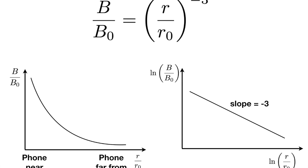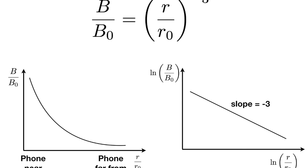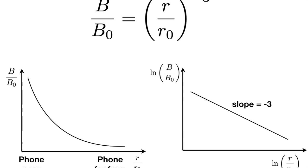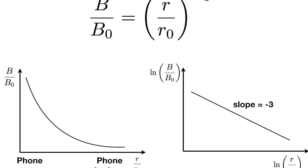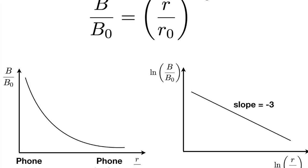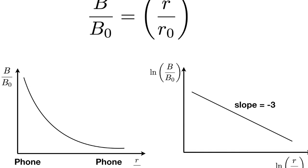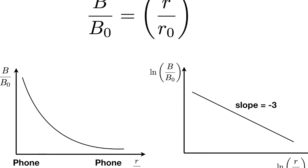In our lab we will be analyzing the linearized form of this relationship, where we calculate the natural log of both axes: log R over R-naught on the horizontal axis, and log B over B-naught on the vertical axis. B-naught and R-naught are simply the measurements when your magnet is closest to your phone — so for the smallest value of R, that is R-naught.